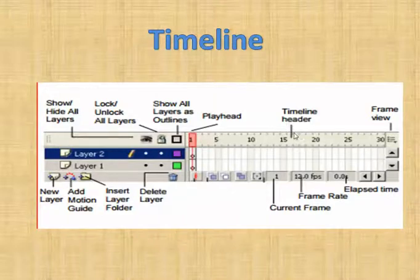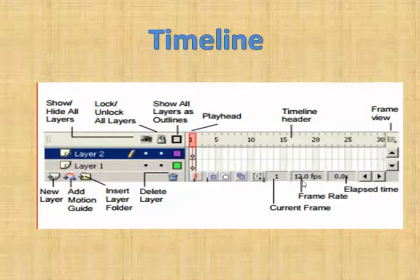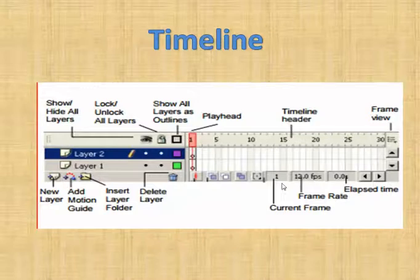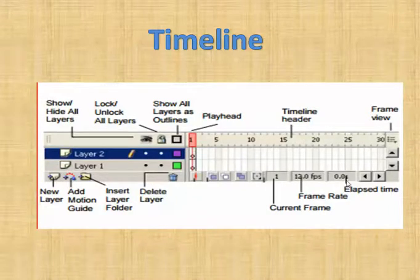This is the timeline header. Then we have frame view. The frame rate by default is 12 frames per second — if you want a slower animation, you can change this number. This area shows the status of the current frame; right now the play head is in the first frame. It also shows the elapsed time, indicating how much time the animation has taken or what the total duration of the animation is.